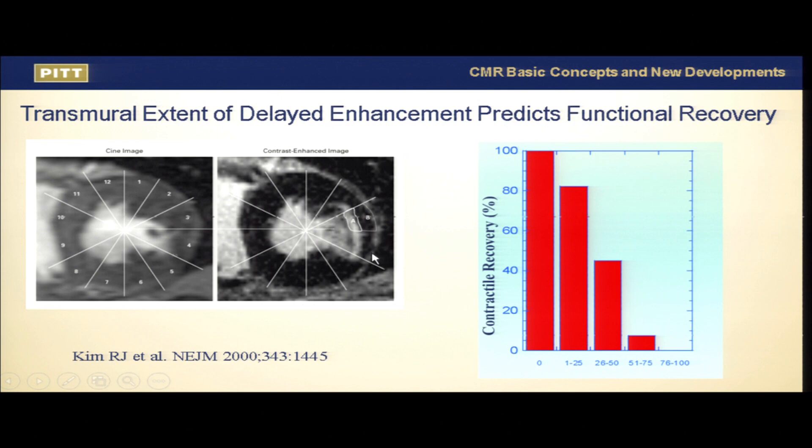If you have a transmural infarct throughout the whole segment, that predicts the tissue is dead — revascularization won't help. But if the wall has less than 25% transmural enhancement, more than 80% of these patients would have good functional recovery — and that is the role of myocardial viability assessment.